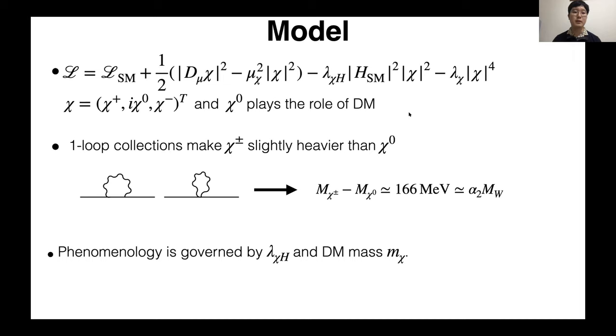At tree level, chi plus-minus and chi zero are degenerate in mass. However, one-loop correction breaks this degeneracy and makes chi plus-minus slightly heavier than chi zero, 166 MeV. And there are three parameters: dark matter mass m_chi, lambda_chi_h, and lambda_chi. However, lambda_chi is not important for the phenomenology, and the phenomenology is governed by lambda_chi_h and m_chi, so I'll calculate the constraint to these two parameters.